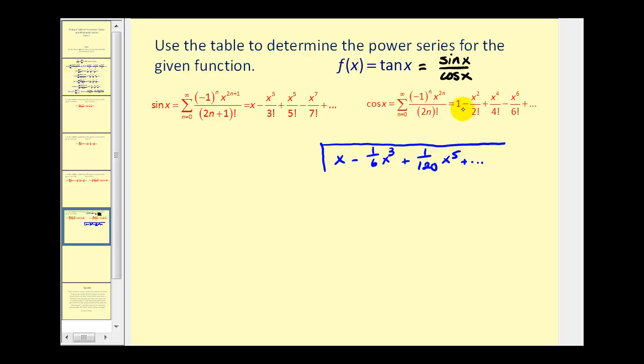I'll do the same for the power series for cosine x. We'll have one minus one half x squared plus one twenty fourth x to the fourth and so on.